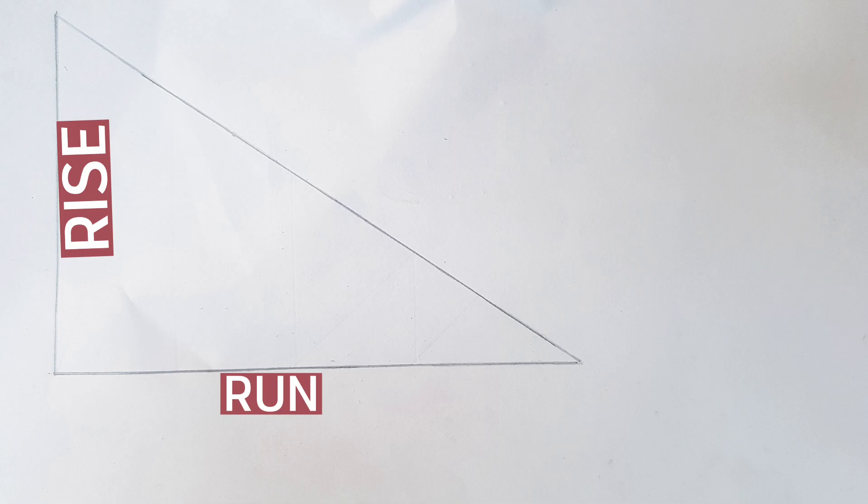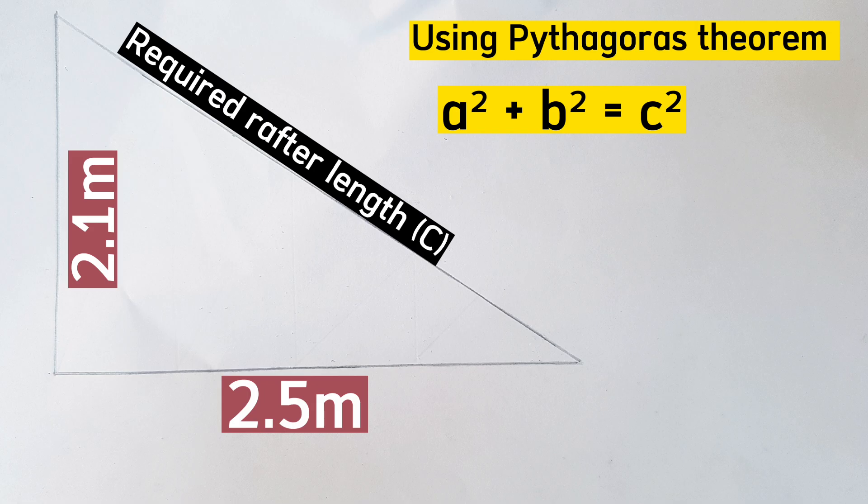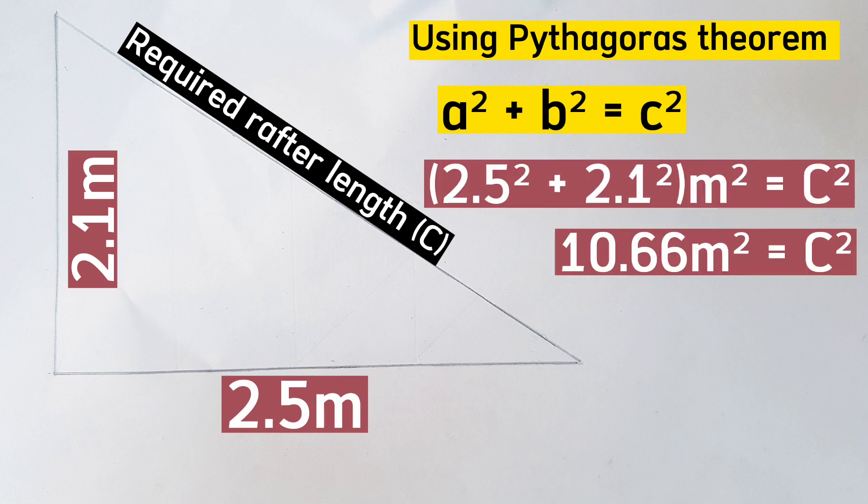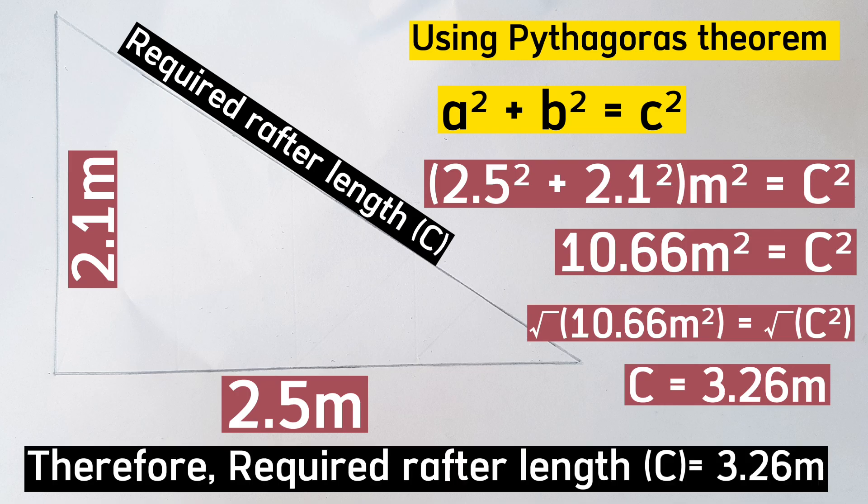Assuming a run of 2.5 meters, which is side A, and a rise of 2.1 meters, which is side B, then using Pythagoras theorem formula, we put this on the calculator. This will be 2.5 meters squared plus 2.1 meters squared, which will give us 3.26 meters as the length of our rafter. If you need, you can also add the overhang.